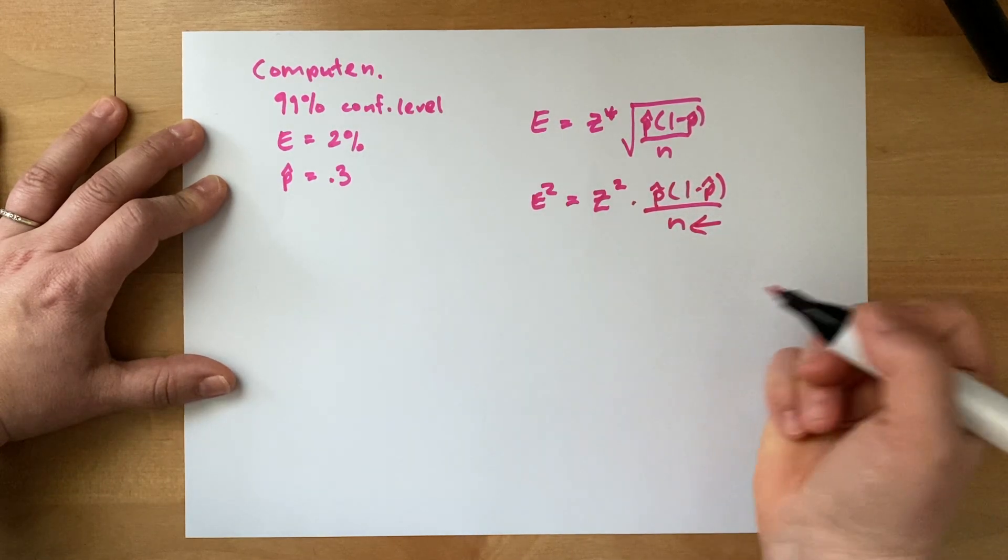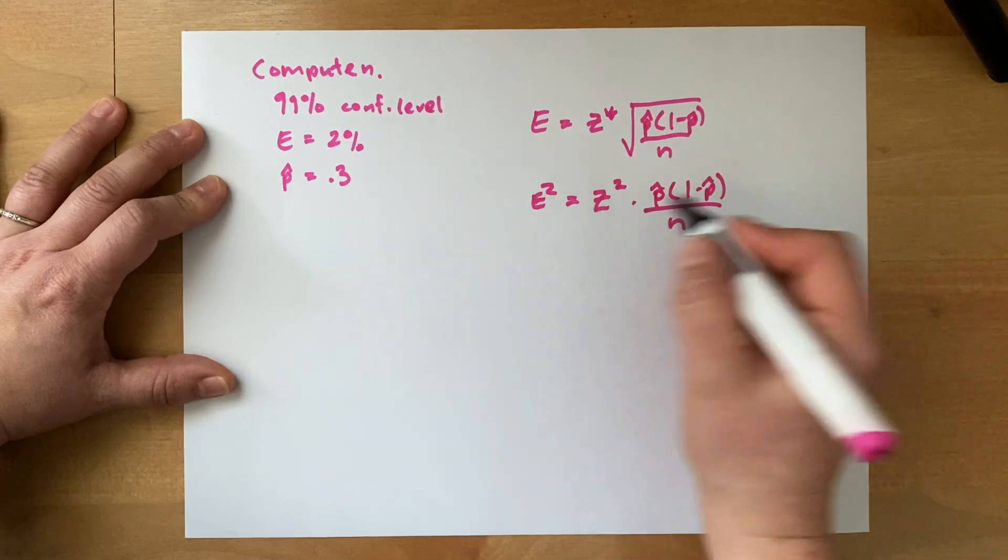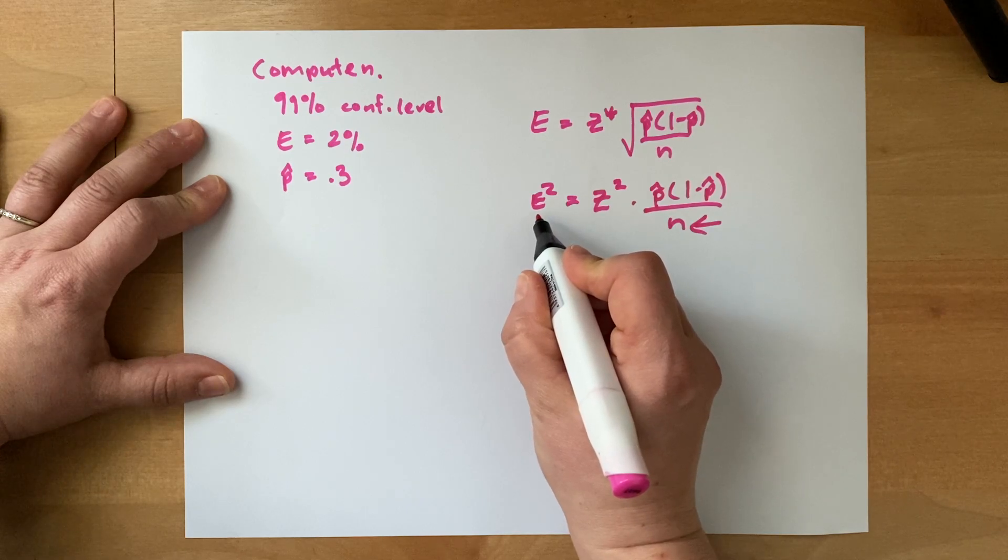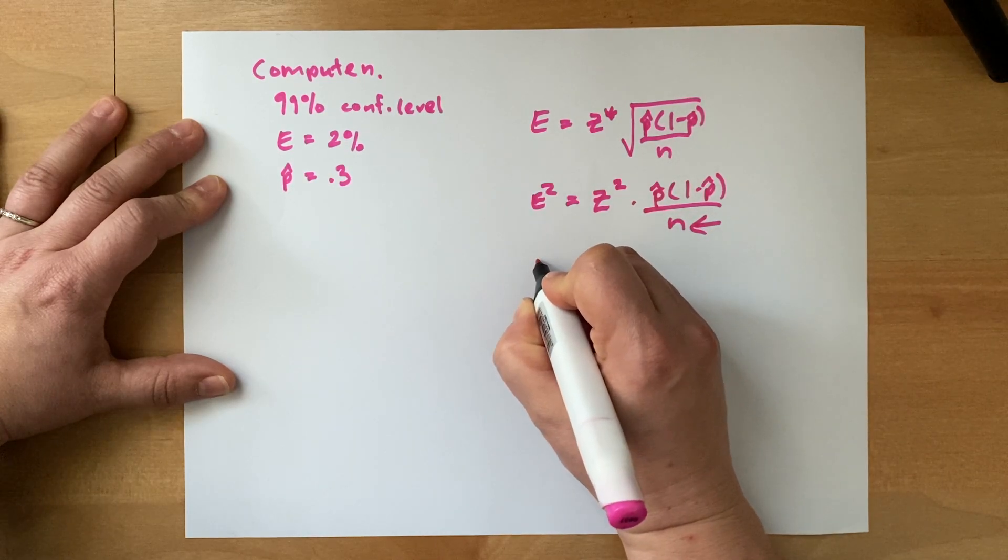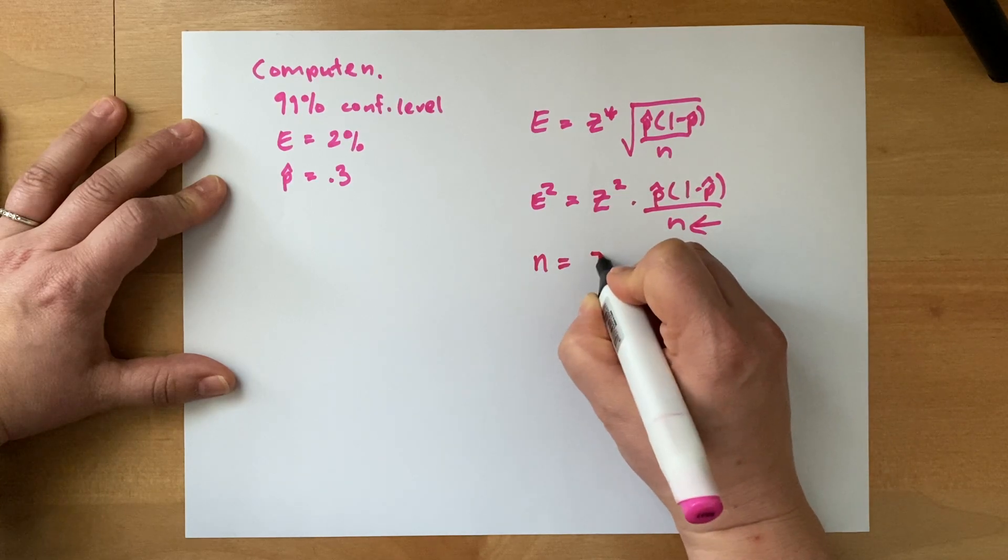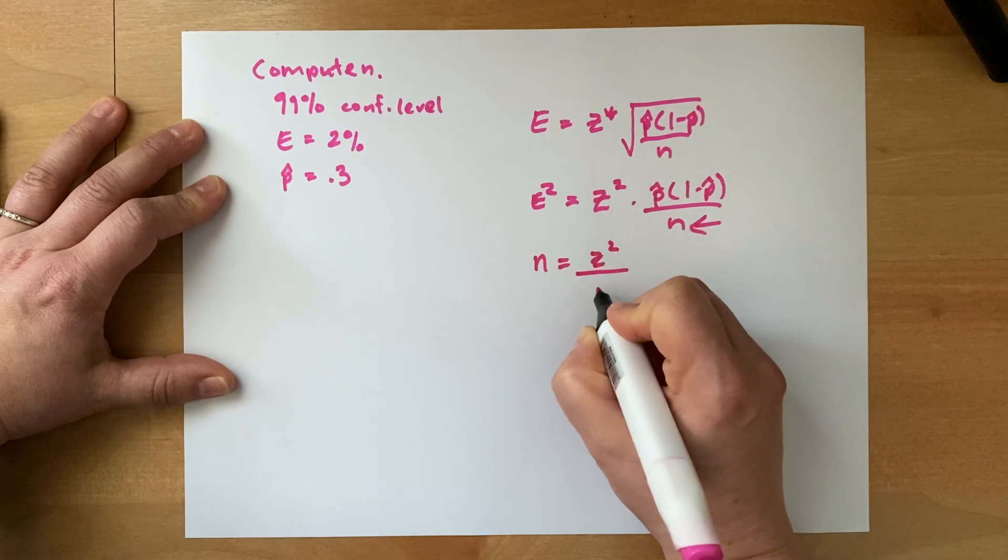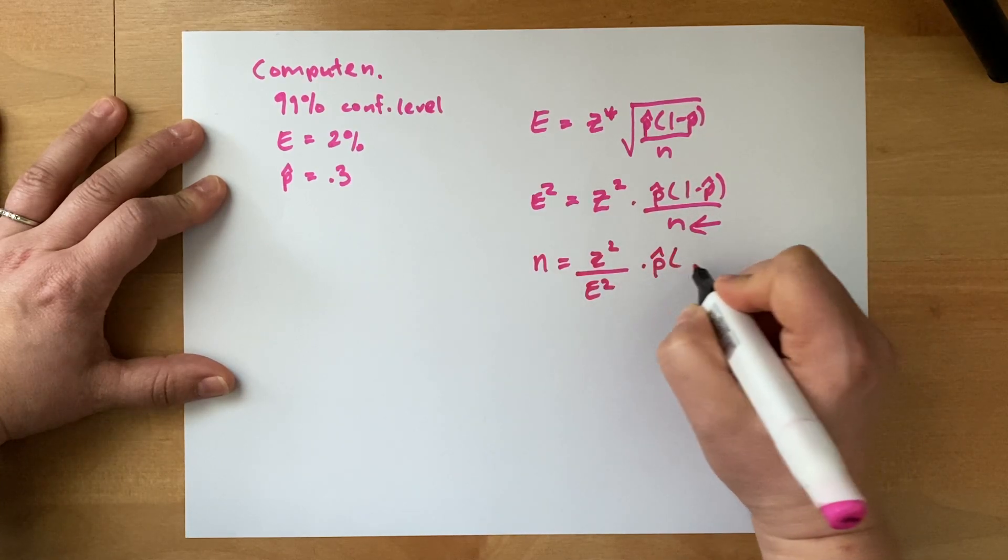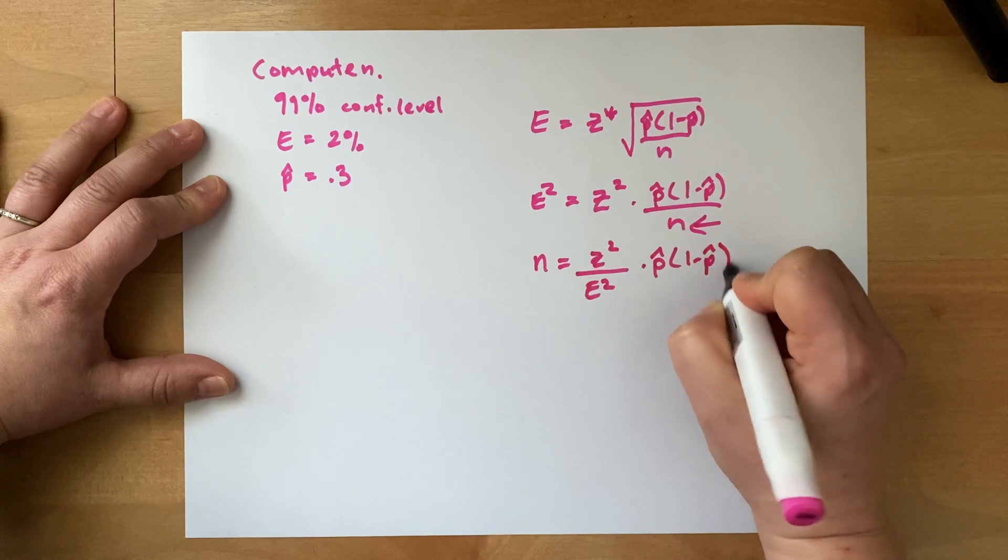Now the goal is to solve for n, but n is in the denominator. So if we're using algebra, we would multiply both sides of this equation by n, divide both sides of the equation by e squared, so we're solving for n. So that yields n is equal to z squared divided by e squared times p hat times 1 minus p hat.